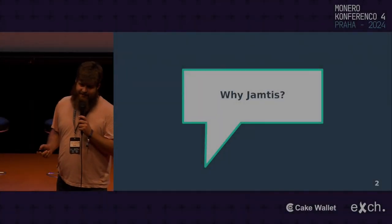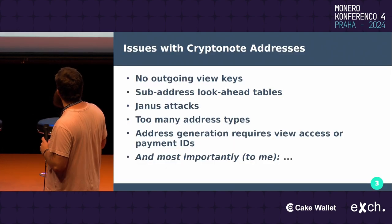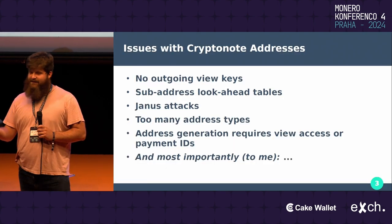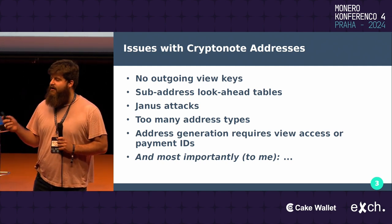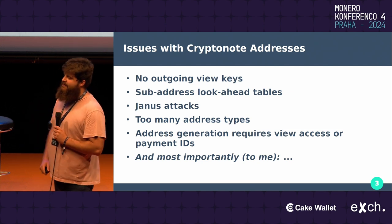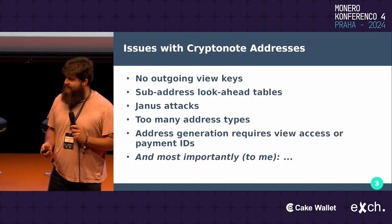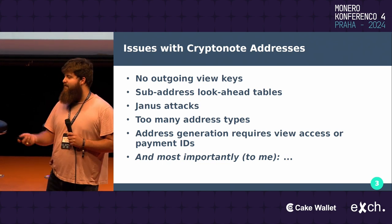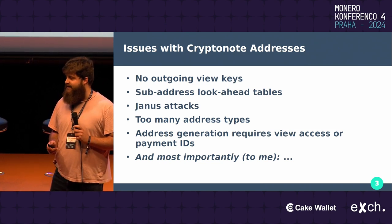Why Jamtis in the first place? Just a quick recap. Current CryptoNote addresses do not have outgoing view keys, so you cannot see any transaction information going out in a consistent manner. Sub-address look-ahead tables take up a lot of memory. We've got Janus attacks, too many address types — so we should have another type. Just kidding.